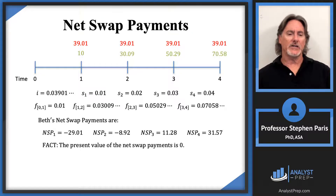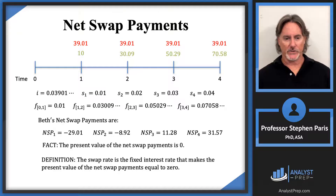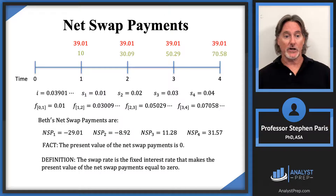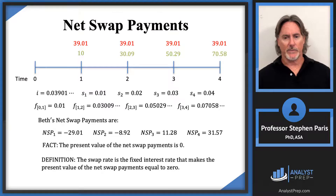I could actually make this definition: I could define the swap rate to be the fixed interest rate that makes the present value of the net swap payments equal to zero. So that swap rate I of 0.039 — if that were the unknown in the calculation of net swap payments, I could define that I to be the interest rate that makes the present value of the net swap payments equal to zero.